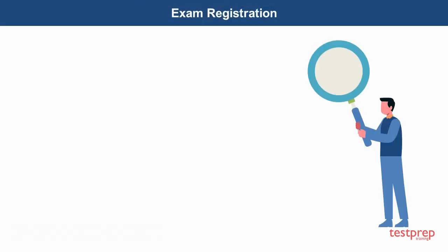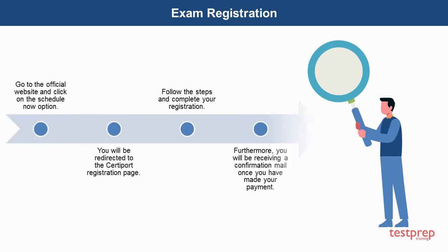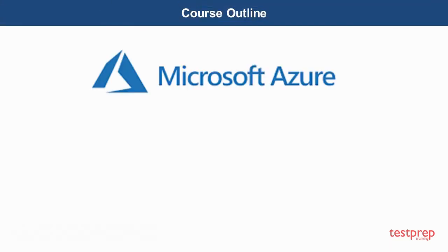For registering yourself for the exam, follow these steps. First, go to the official website and click on the Schedule Now option. Second, you will be redirected to the CertiPort registration page. Third, follow the steps and complete your registration. Furthermore, you will be receiving a confirmation email once you have made your payment.